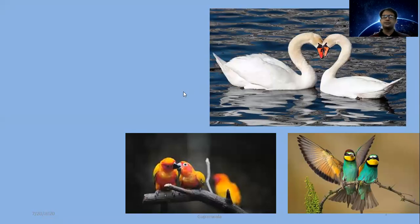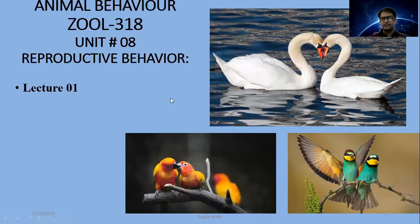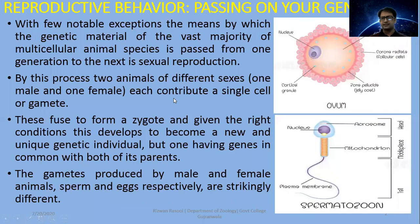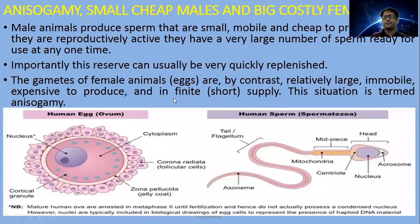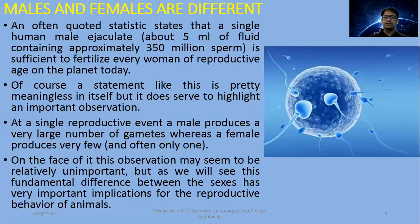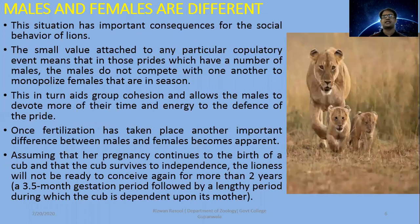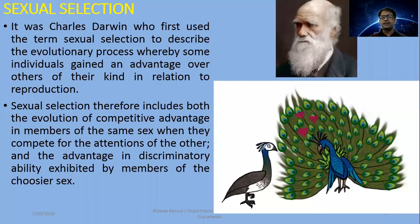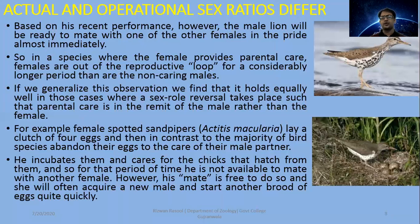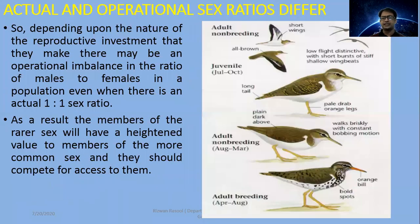Bismillah ar-Rahman ar-Rahim. In the last lecture, we discussed reproductive behavior of organisms. We were talking about anisogamy and mate trials. In anisogamy, we discussed that there are two types of gametes and different contributions for males as well as females. From mate trials and sexual selection, we discussed that sexual ratios differ.